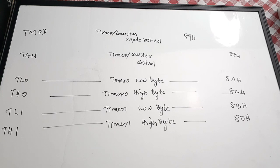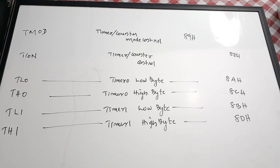This concludes the memory organization of the 8051. I hope you understood the overview of everything — the locations of special function registers, general purpose registers, and the register bank organization. If you found it useful, please give it a thumbs up, share with your friends, and subscribe to the channel for more videos.